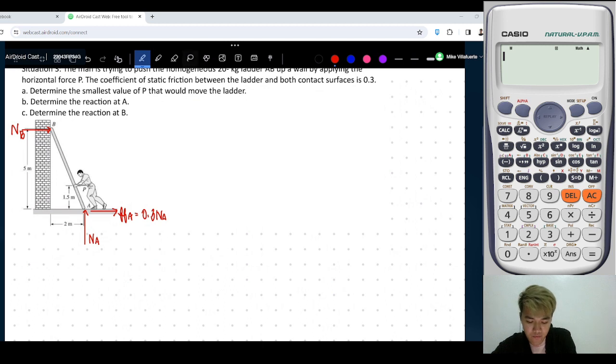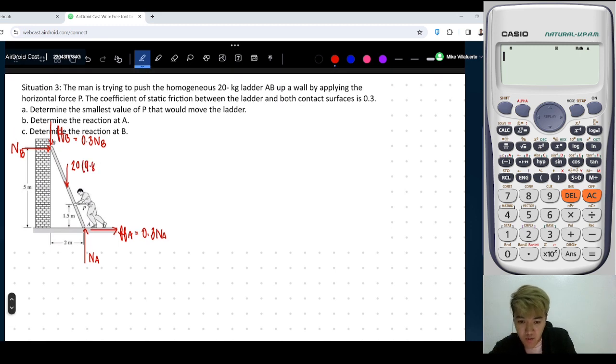And then, if the bottom of the ladder is going to the left, that means the top is going upward. So the friction force at B opposes the motion. That is 0.3 NB. And then the weight of the ladder, which won't change, is always there: 20 times 9.81. That will act at the center of the ladder. So if this is the center, this is 1, this is 1, then this is 2.5, 2.5.